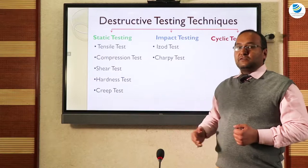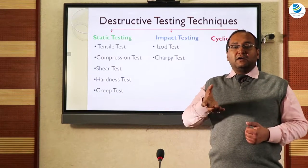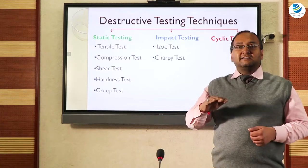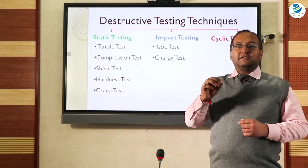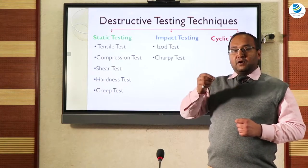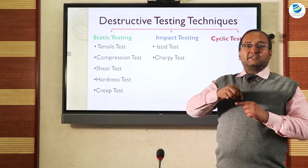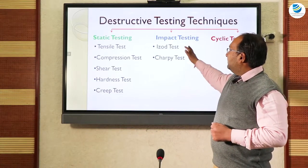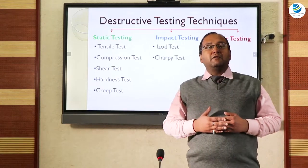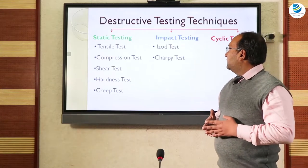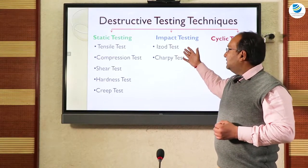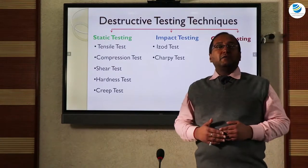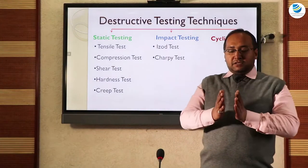From tensile and compression tests, we calculate the strength of the material under a particular loading. Hardness tells us how hard the surface is — how deeply anything can penetrate it. Then we have the impact test to find out the ultimate strength of the material, determined using two tests: the Izod test and the Charpy test. The cyclic test determines the fatigue of the material by applying a load repeatedly cycle by cycle.